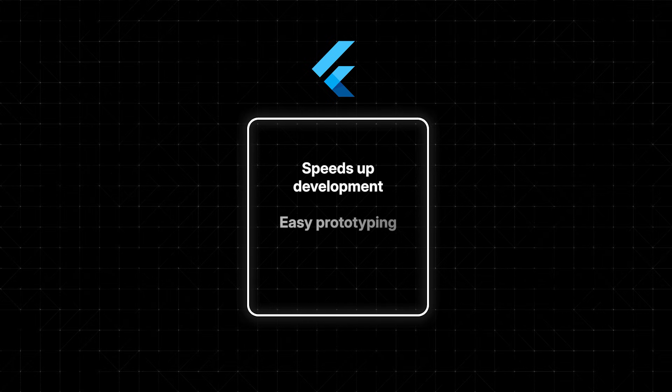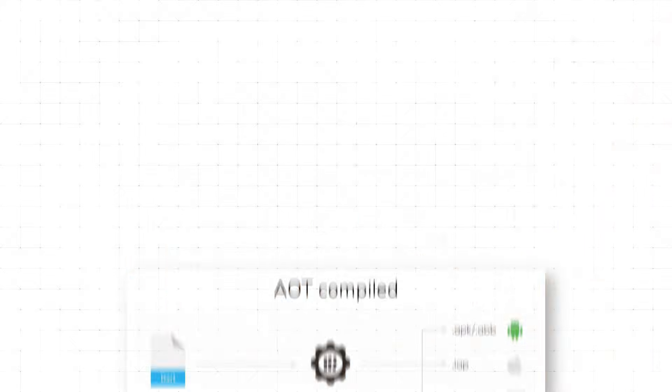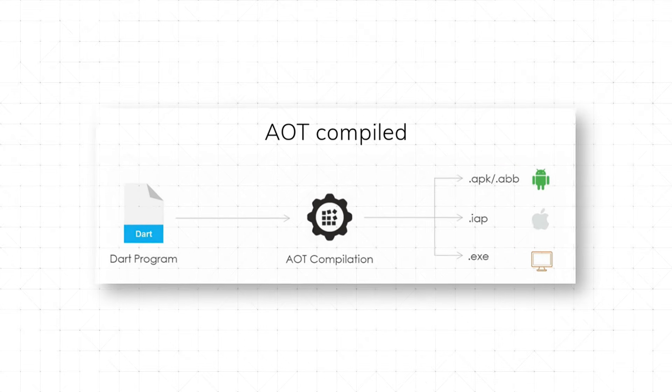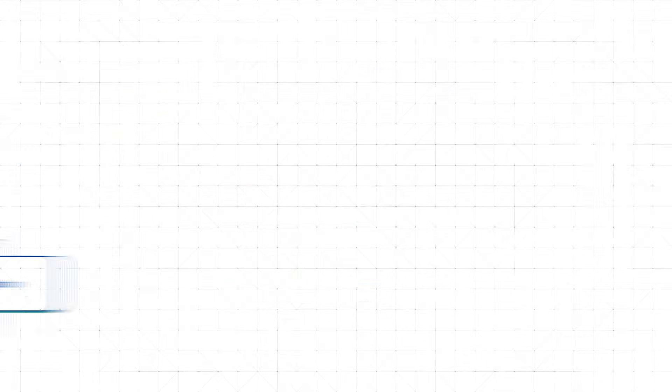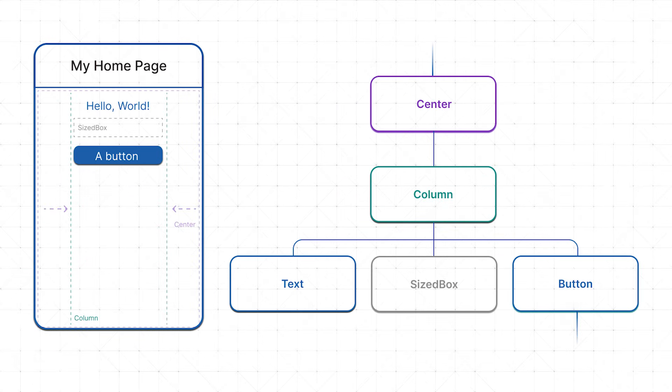Flutter's Hot Reload feature is a total game-changer for developers. It lets you see changes in your code almost instantly, without restarting the app or losing its state. This speeds up development, makes prototyping a breeze, and simplifies debugging. Flutter's AOT compilation to native ARM code gives it amazing performance, almost on par with real native apps. This means you get smooth animations, quick load times, and a highly responsive user experience, even with complicated apps. Its custom widgets, rendered by its own Skia engine, help keep a consistent look and feel across all platforms, no matter the underlying OS or device.